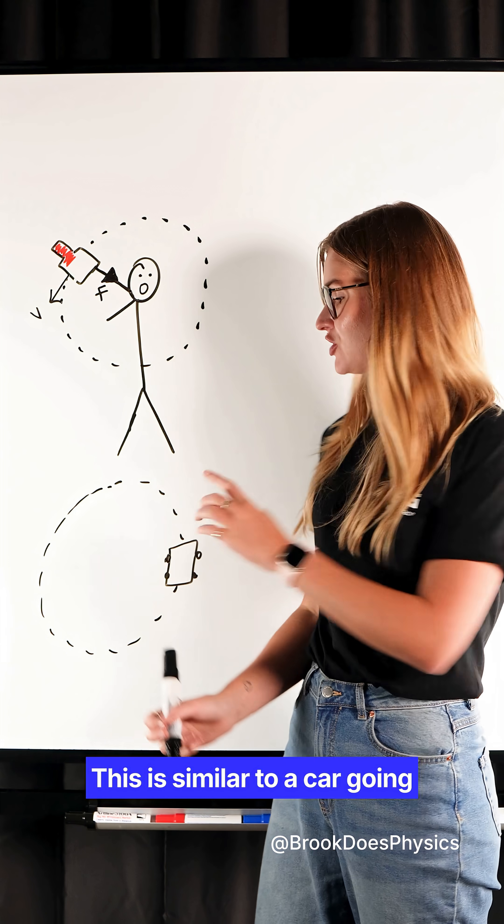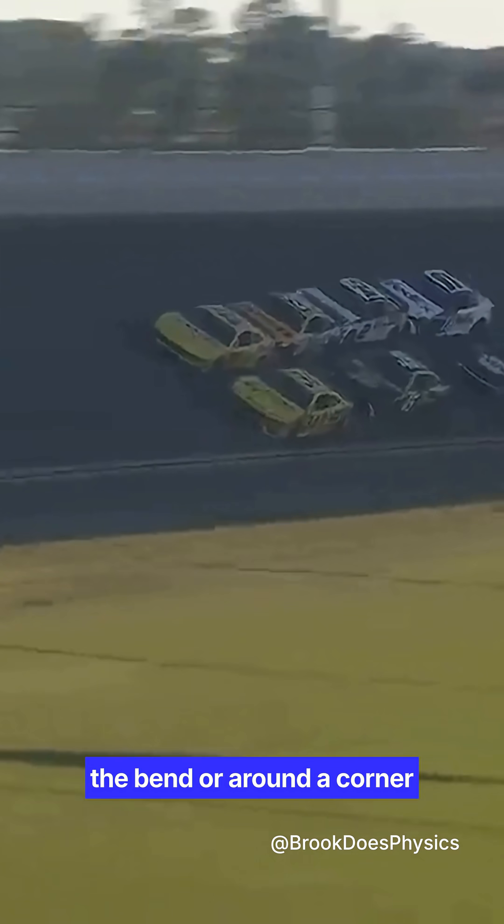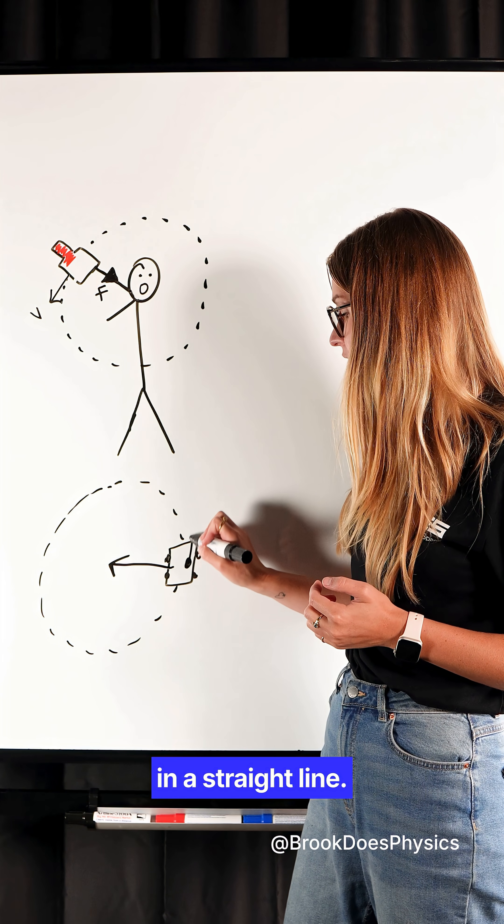This is similar to a car going around a bend or around a corner. The car can only move around the bend because there's a force pulling towards the center of the circle, but you want to keep moving in a straight line.